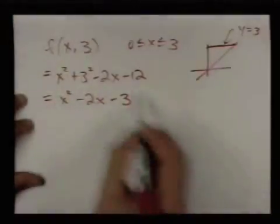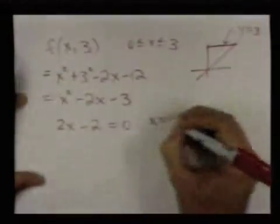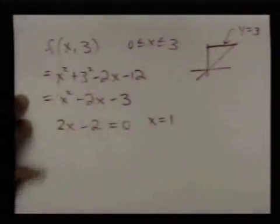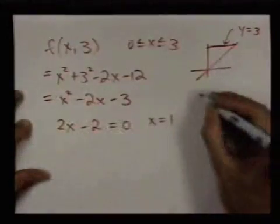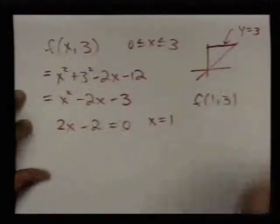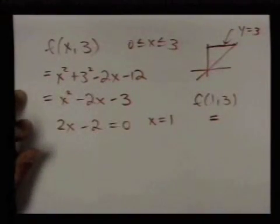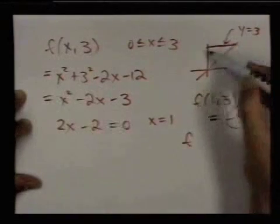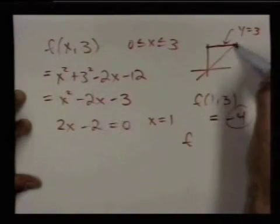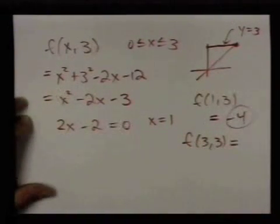To maximize this one-variable function on that interval, 2x-2 is the derivative. Setting it equal to 0, x has to be 1. So when x=1 and y=3, the function has the value -4. We've already plugged in one endpoint; now I should plug in the other one, which is (3,3). There the function equals 0.